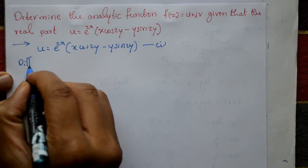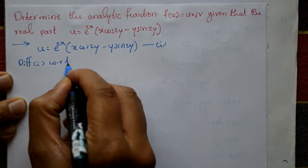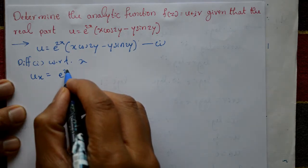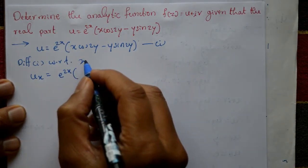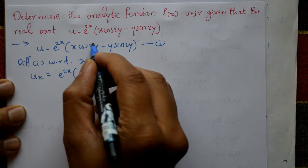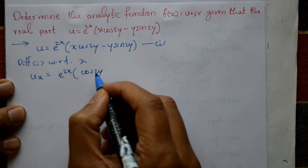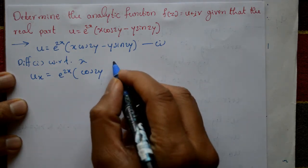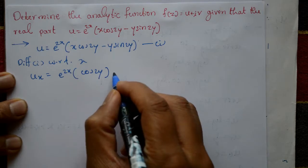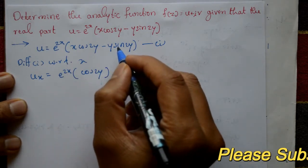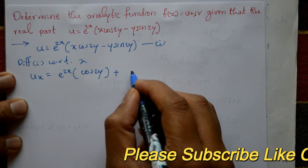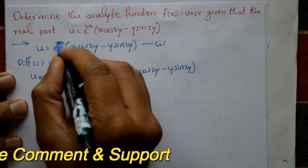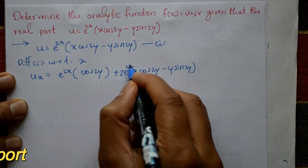Differentiate equation 1 with respect to x: ∂u/∂x. Using the product rule, e^(2x) as is, differentiate the bracket with respect to x — x becomes 1, cos2y is a constant. y is a constant. The bracket remains as is: (x·cos2y - y·sin2y), then differentiate e^(2x) to get 2·e^(2x).